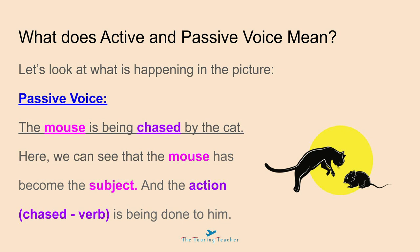Now let's look at passive voice. We're looking at the same picture of the cat chasing the mouse, but the sentence in passive voice is: the mouse is being chased by the cat. It's the same thing happening, but the sentence has been reworded. Here we can see that the mouse has become the subject — shown in pink — and the action, which is chased, which is the verb, is being done to it. The action or verb is being done to the subject, so the mouse is now the subject, and that makes it passive voice.